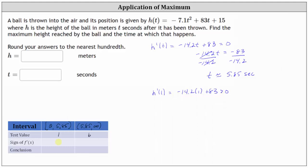If the first derivative is positive over this interval, then we know the function is increasing over this interval, or the height is increasing over this interval.